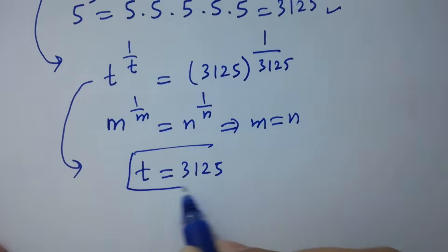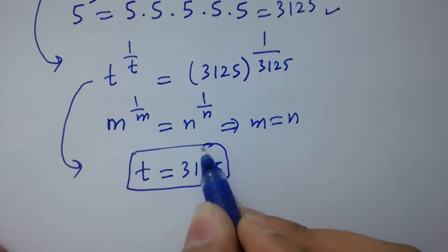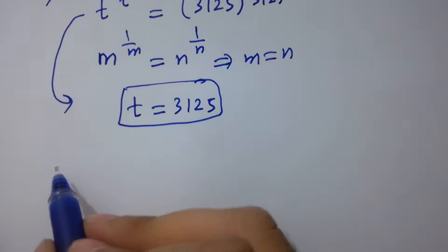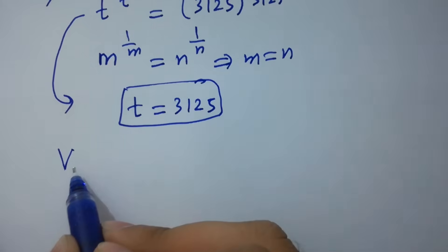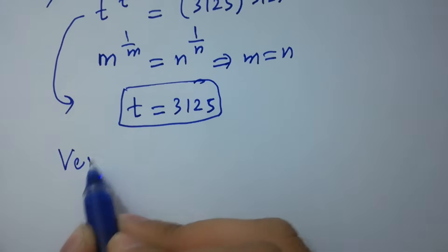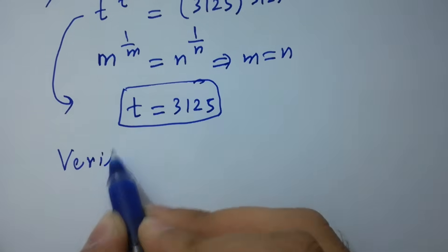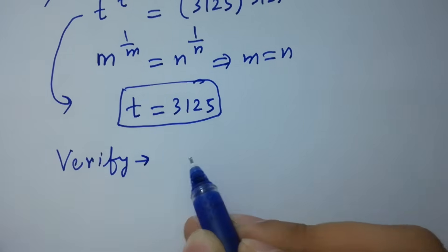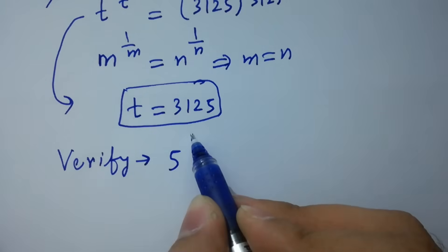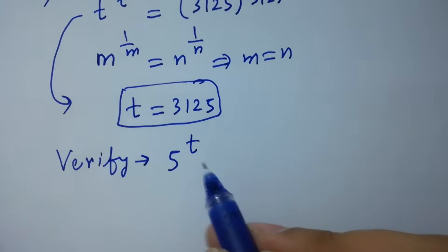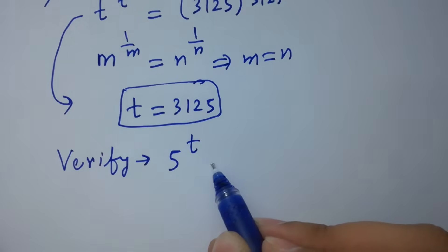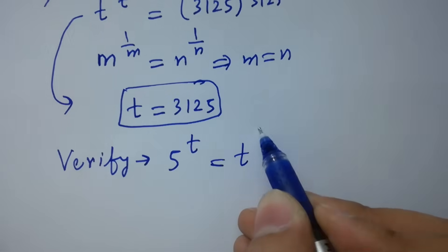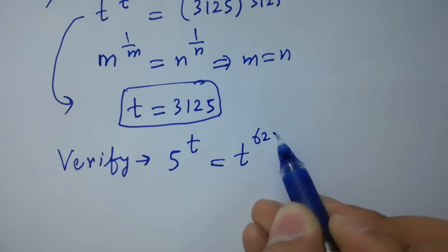I hope you understood that the value of t is 3125. In the next step, I am going to verify: 5 to the power t equals t to the power 625.